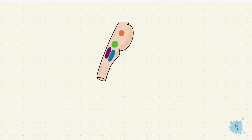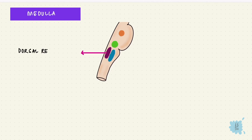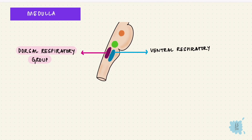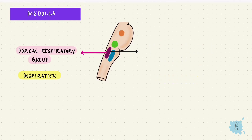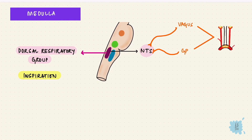There are two major groups of neurons in the medulla: the dorsal respiratory group and the ventral respiratory group. The dorsal is in the dorsal medulla and the ventral is in the ventral lateral medulla. The dorsal regulates inspiration. The ventral has both inspiratory and expiratory neurons but mainly regulates expiration. These neurons project to the pre-Bötzinger complex. Most of the neurons in the dorsal respiratory group are in the nucleus tractus solitarius, which is the sensory termination of the vagus and the glossopharyngeal nerve — these are the afferent nerves from the peripheral receptors.